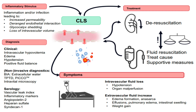To summarize: CLS starts with an inflammatory stimulus, where inflammation or infection triggers increased permeability in blood vessels, leading to deranged endothelial interaction, glycocalyx shedding, and loss of intravascular volume. This leads to fluid moving out of blood vessels into surrounding tissues — CLS occurs as a result of these inflammatory processes, leading to significant fluid shifts from the intravascular space to the extravascular space.